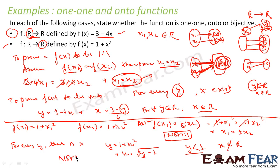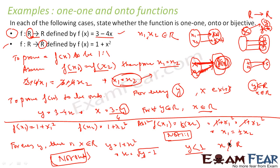Since there exist real numbers y less than 1 for which no real x exists, we can say that f(x) = 1 + x² is not onto. For a function to be onto, for every y in R there must be an x in R. Here, for y < 1, x is not real, so it is not onto. We will solve a few more examples using this method — please understand this approach rather than always using the domain and codomain method.